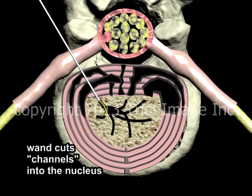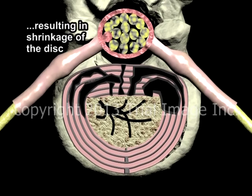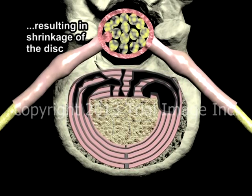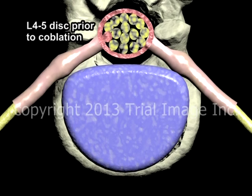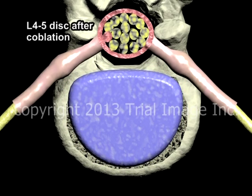Each time the coblation wand is withdrawn, the electrical charge applied to it is changed, resulting in coagulation of the tissue on either side of the cut channels. The coagulation pulls the walls of the channels together, resulting in an overall shrinkage of the size of the nucleus and therefore of the disc. When successful, coblation and coagulation can reduce overall disc size by 10 to 15 percent, resulting in a reduction in the disc bulge. Many patients have a marked improvement in symptoms as a result.